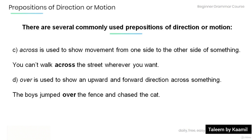'Over' is used to show an upward and forward direction across something. For example: 'The boys jumped over the fence and chased the cat,' meaning that the boys jumped upwards and chased the cat.